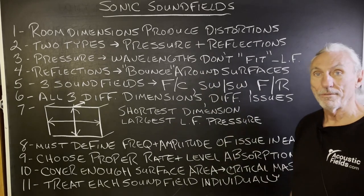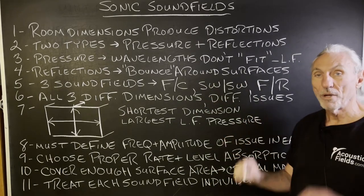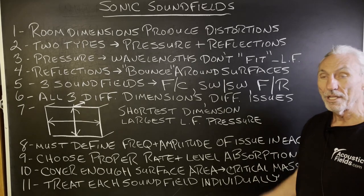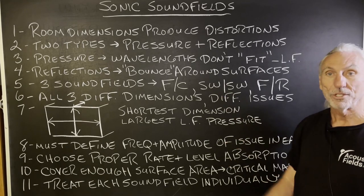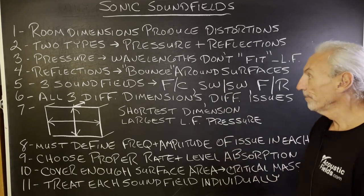Reflections bounce around everywhere. They're short, straight-line energy — ray energy that bounces everywhere off the walls.